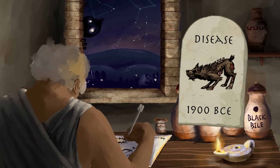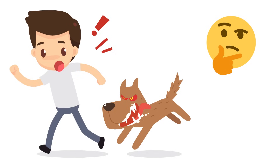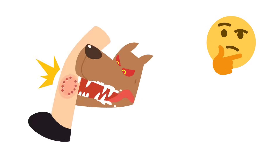The earliest records were written on tablets, and as far back as 1900 to 1600 BCE, these writings hinted at the possibility that rabies transmission was somehow related to the saliva of an afflicted animal. The greatest minds in nearly every era since then had sought to understand how to prevent and treat rabies, and speculated about what caused it.